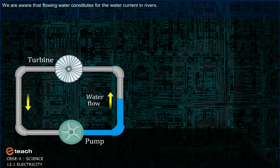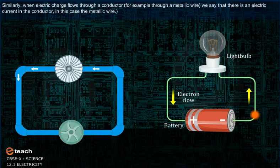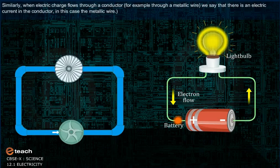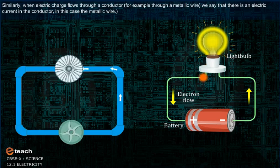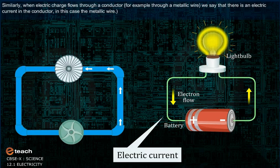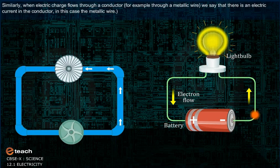We are aware that the flowing water constitutes water current in rivers. Similarly, when electric charge flows through a conductor, for example, through a metallic wire, we say there is an electric current in the conductor. In this case, the metallic wire.